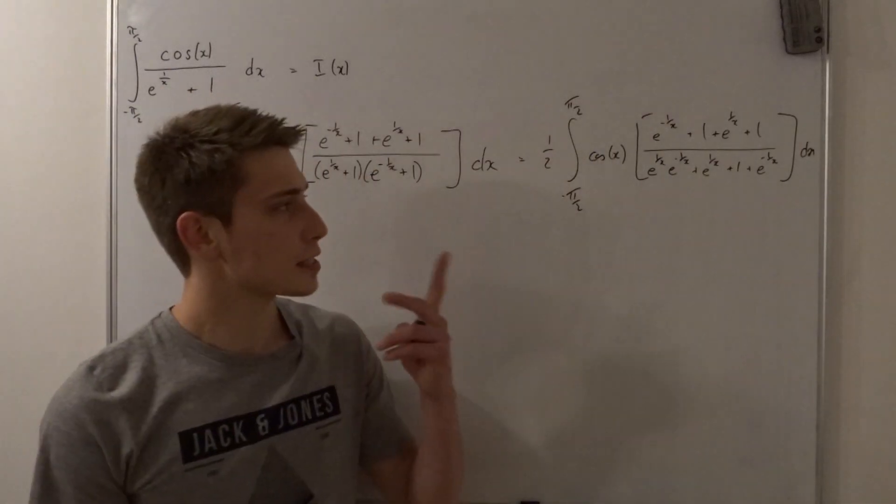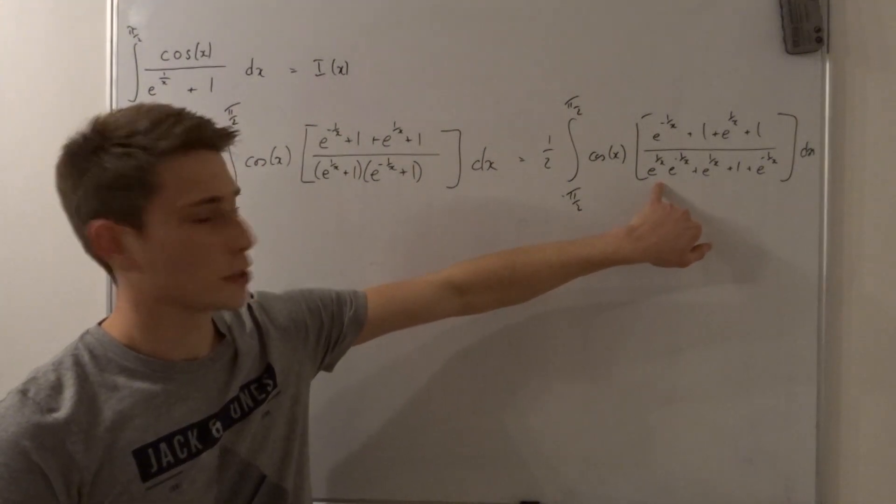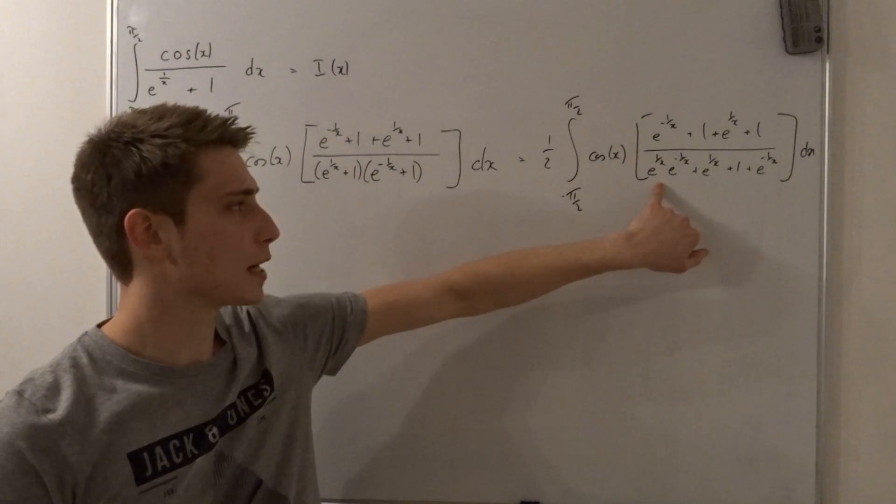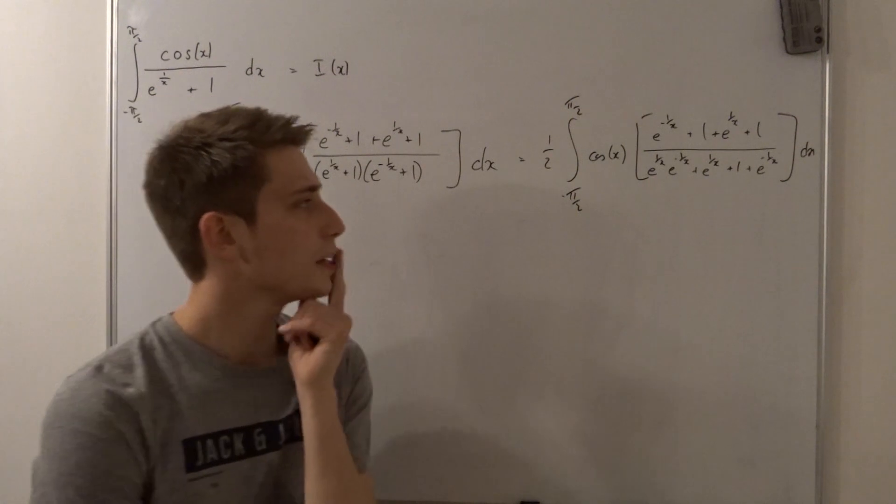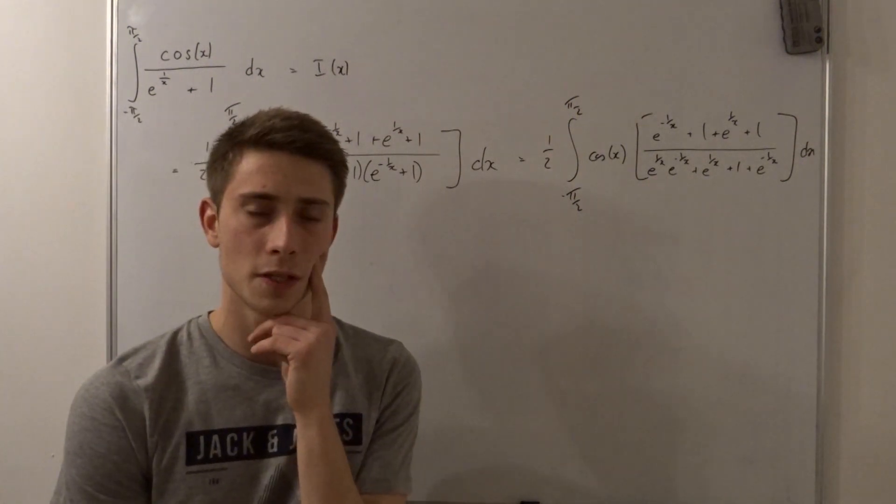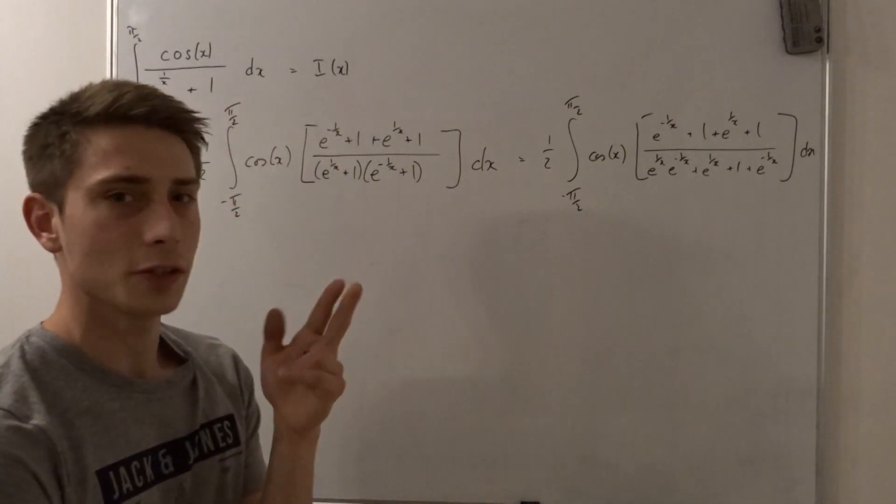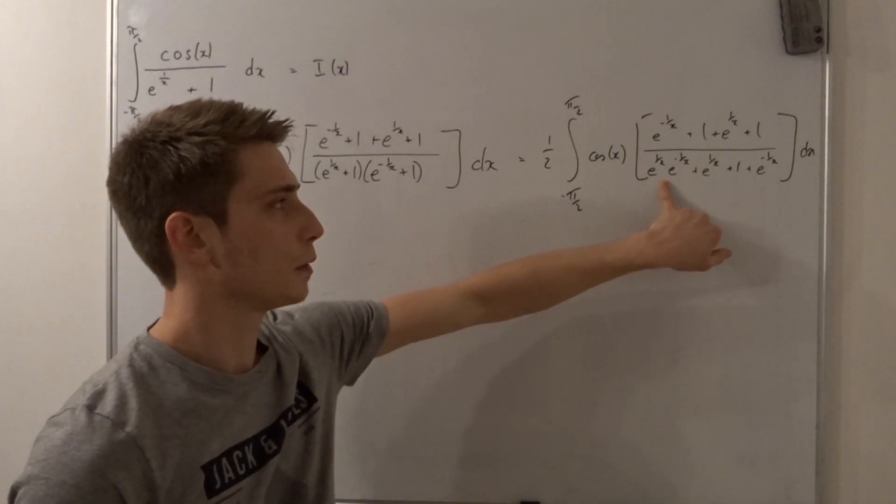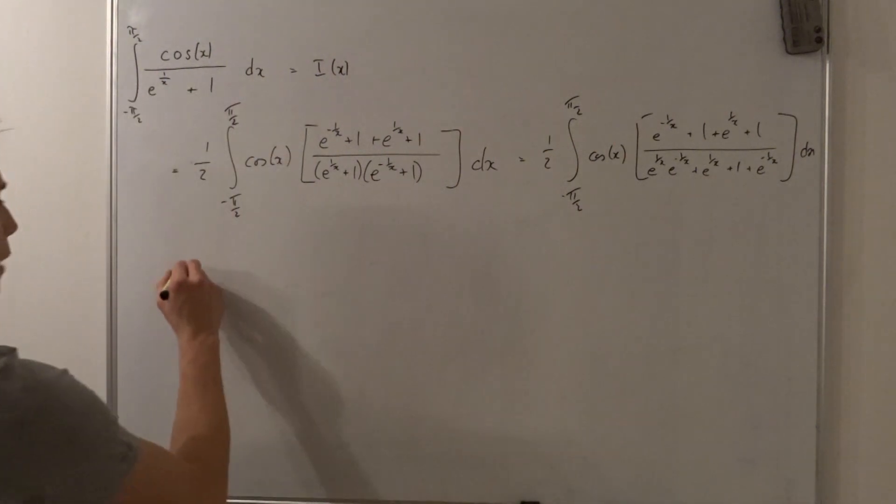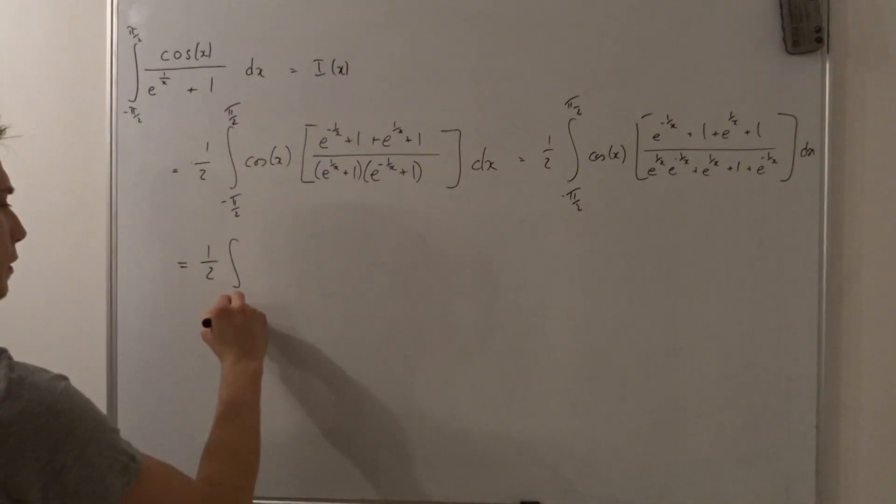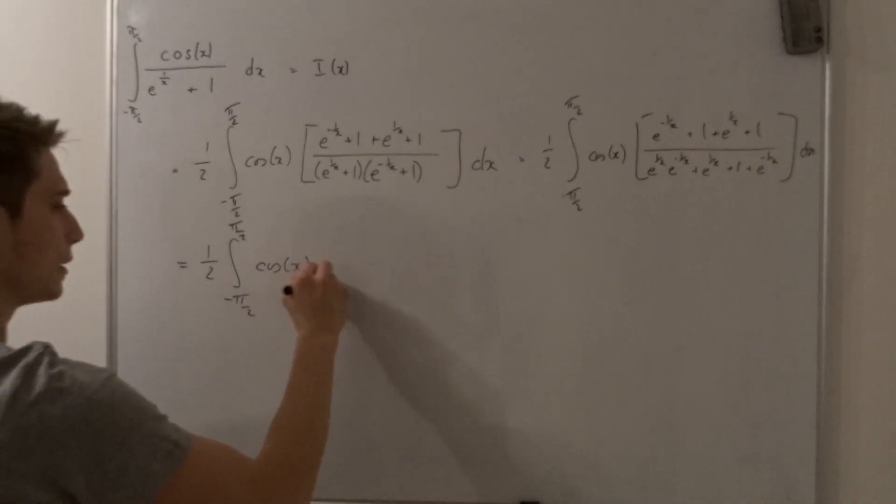Okay the last thing you might see is that well those two cancel each other out. So this becomes a 1 because e to the 1 over x times e to the minus 1 over x is just e to the 1 over x minus 1 over x and that's e to the 0. So that's a 1. And what you might notice is when this becomes a 1, well the numerator is the same as the denominator. So all of this cancels out. So what we are left with is just 1 half times the integral from minus pi over 2 to pi over 2 of cosine of x times dx.